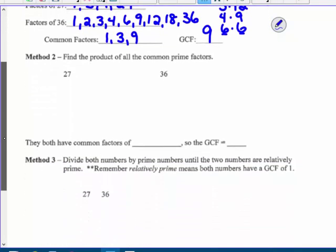The second method, find the product of all the common prime factors. So using our prime factorization method, 27 is 9 times 3, which we know 9 is 3 times 3. So 27 is 3 cubed. 36 is, let's say, 6 times 6, and I get 2 times 3, and 2 times 3. So 36 is 2 squared times 3 squared.